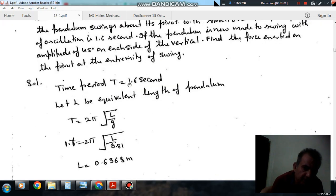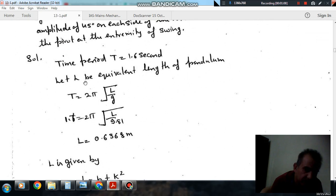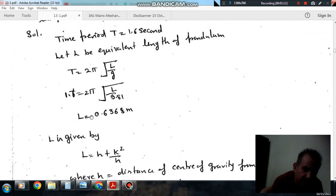Here, the time period is given as 1.6 seconds. That will be the equivalent length of the pendulum. Then, from using time period, T equals 2 pi root L by g, we can find out this equivalent length. So, that is 0.6368 meters.